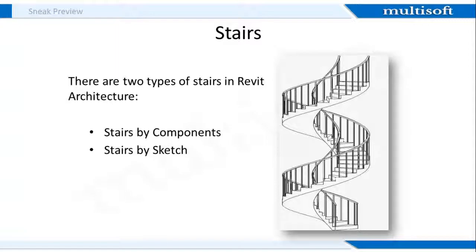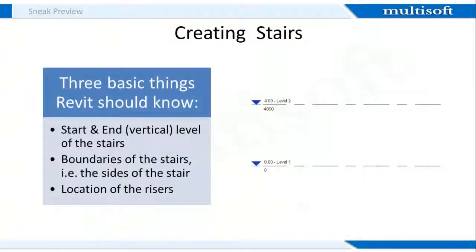I'll focus on the stairs by sketch method of stairs creation and show you how to outline the stair boundaries and the riser lines using Revit. Once you understand this method, the use of the run tool is very easy. In order to create a stairs element, you need to tell Revit about three basic things. First, at what level do the stairs start and end? This can be done simply by picking the corresponding predefined levels. In majority of cases, these levels will correspond to two adjacent finish floor levels one above the other.